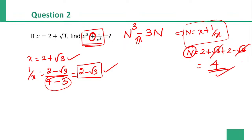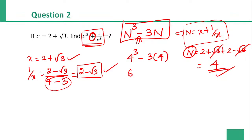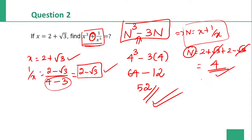So 2 plus 2 is 4. The n value is 4. Substituting into n cube minus 3n: 4 cube minus 3 into 4. 4 cube is 64. 3 fours are 12. So 64 minus 12 is 52. The answer is 52 is the right answer.